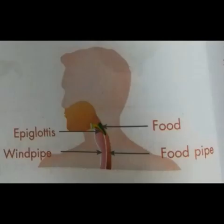The food pipe, also called the esophagus, is a long thin tube-like structure that connects the mouth to the stomach. It is a little less than a foot long. From the mouth, the food is transferred to the stomach through the esophagus.